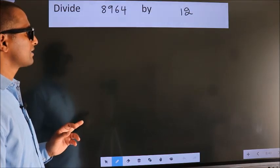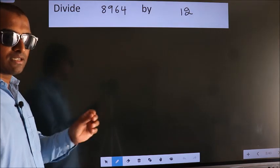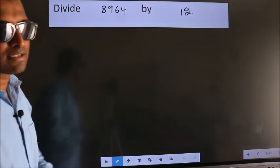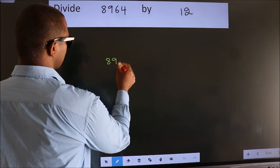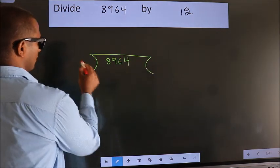Divide 8964 by 12. To do this division, we should frame it in this way. 8964 here, 12 here.